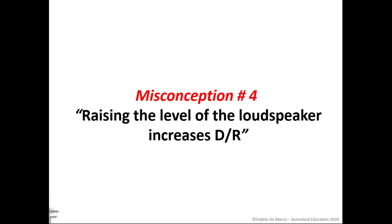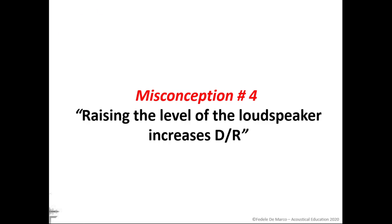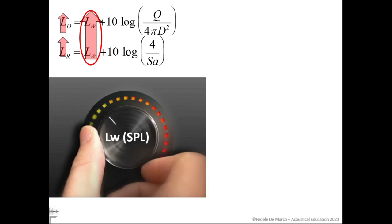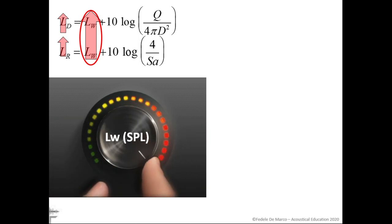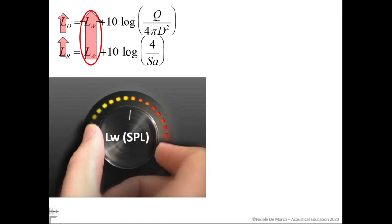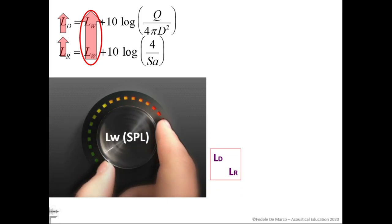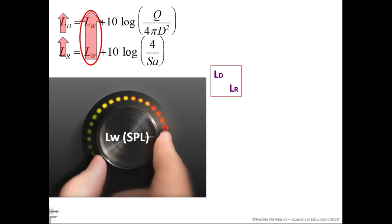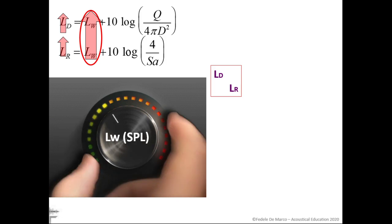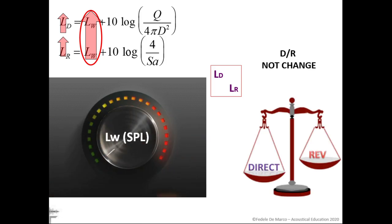Misconception number four: raising the level of the loudspeaker increases the direct-to-reverberant ratio. As you can see in the simple form of the Hopkins-Strikers equations, the level of reverberant field changes if we change the power level of the speaker. Changing the power level of the source, you change by the same quantity both the reverberant field and the direct field levels. So in the room, the direct-to-reverberant ratio remains the same.